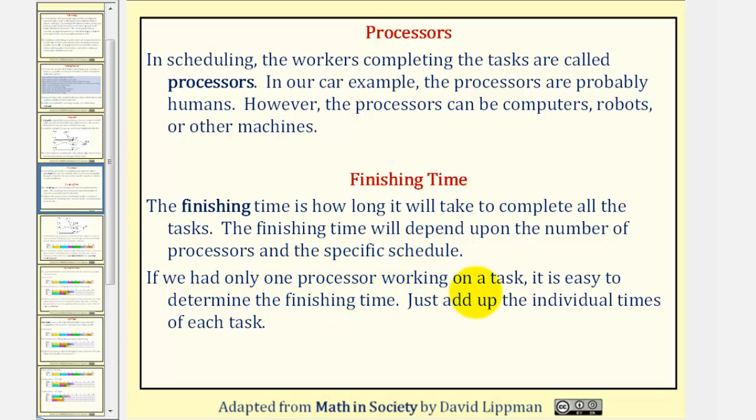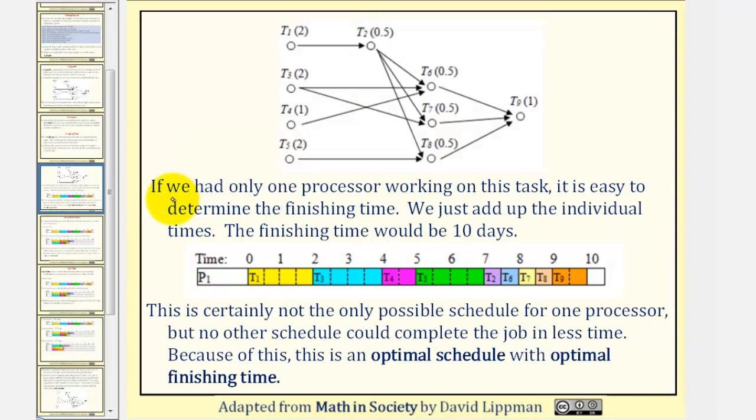If we only had one processor working on a task, it is easy to determine the finishing time. We would just add up the individual times for each task. For example, if we had one processor working on the task of converting this car from gas to electric, we would just add up the individual times, the finishing time would be ten days, as we see here.